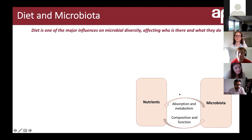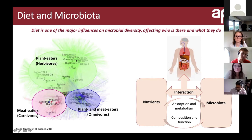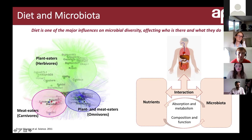Looking at this picture without going into too much detail: in green are the plant eaters, in pink are meat eaters, and in blue are plant and meat eaters. Just by focusing on the circles you can see that they don't touch, meaning that these mammals eating different diets have very different microbiota. Scientists have shown that diet, and the diversity of the diet, is very important in influencing our microbiome.